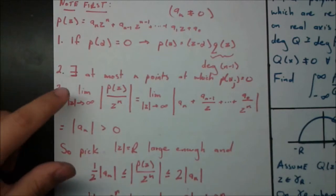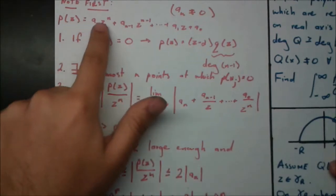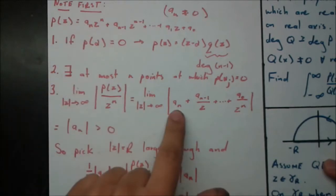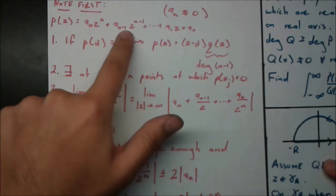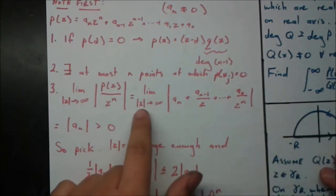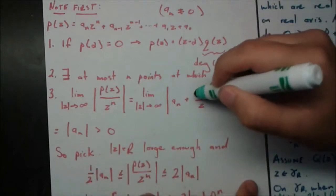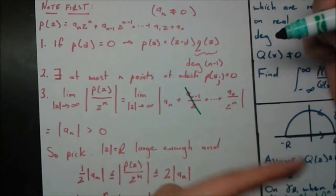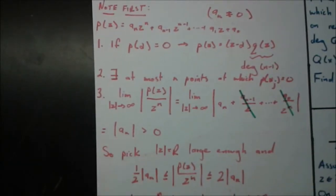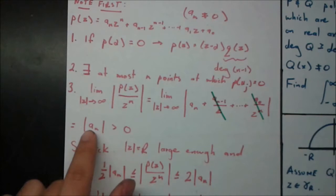Fact three — the most important: we want to find the limit as |z| → ∞ of |P(z) / z^n|. We divide P(z) by z^n: the leading term a_n z^n divided by z^n gives a_n, and every lower-order term has a z in the denominator, so they all go to zero as |z| → ∞. All that remains is |a_n|. Since a_n ≠ 0, its modulus is strictly greater than zero.